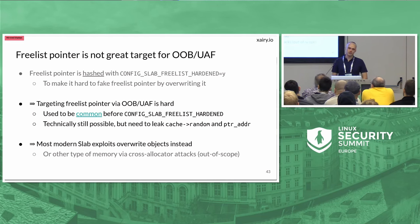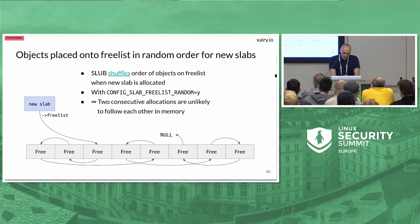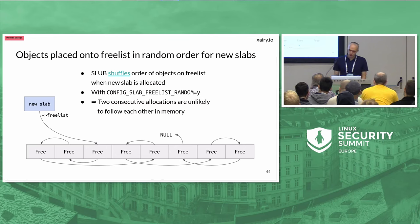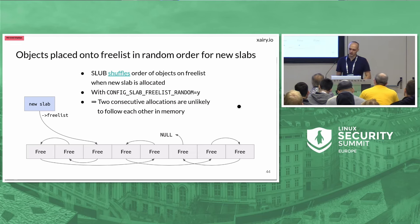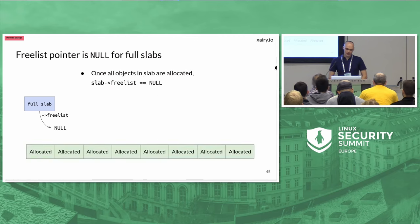When a new slab is created, all of the slots within the slab are put onto the free list in random order. It used to be sequential, which made out-of-bounds shaping trivial — allocate vulnerable, allocate target, and they'd be adjacent. That's no longer the case. Now you don't know the order of free list slots on a new slab, so it's very unlikely that two objects allocated sequentially will end up next to each other. For full slabs — once all object slots are allocated — the freelist pointer within the slab is just null.